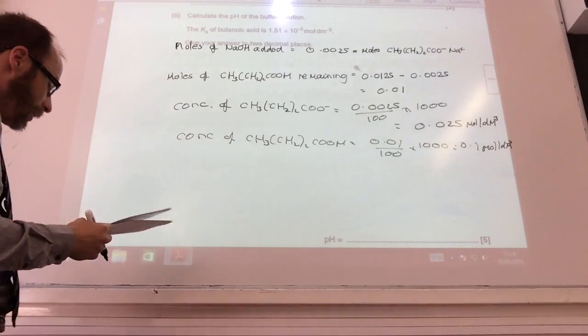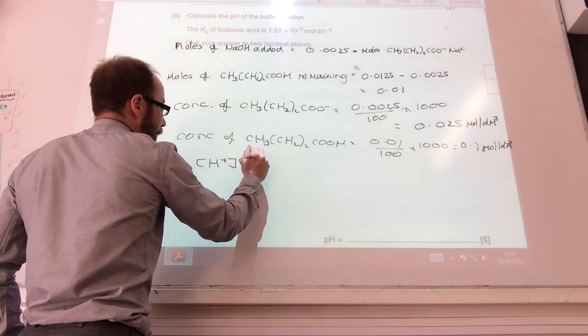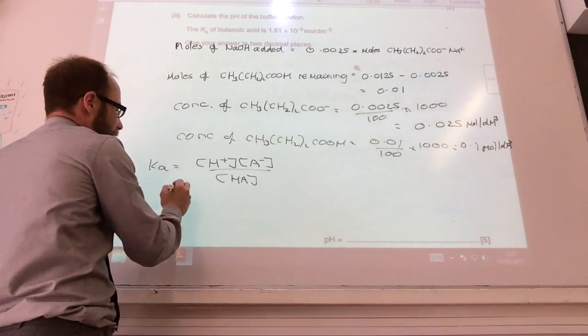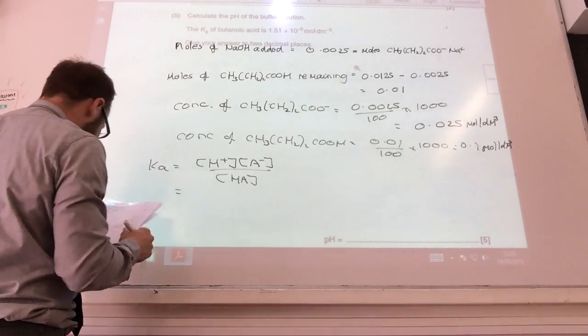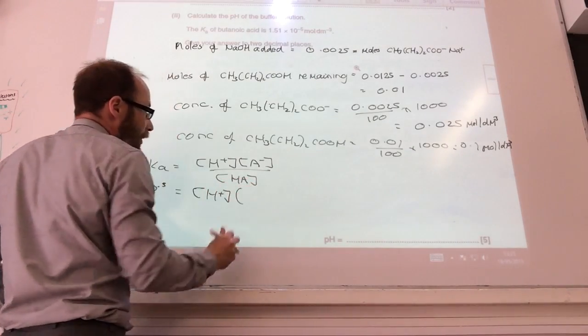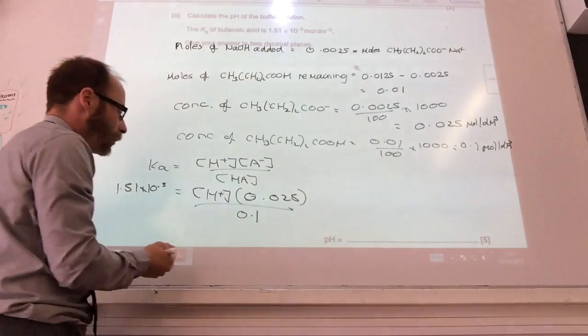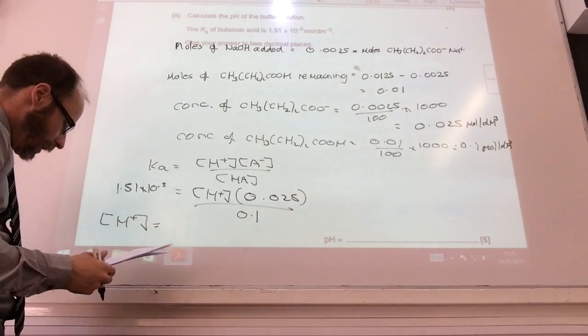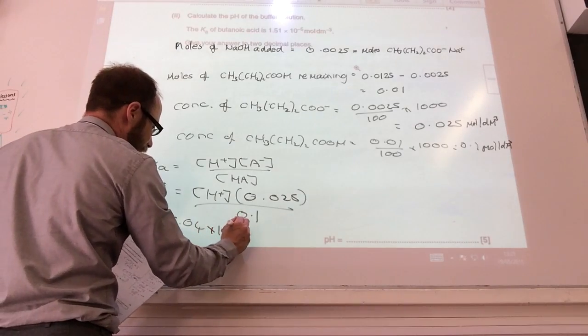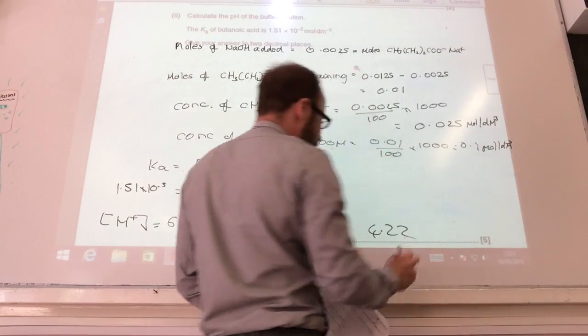So those are the moles that I've got, then all I need to do is plug into my Ka expression. Ka I know is H+ over the concentration of the salt and the concentration of the acid. So Ka, they told me, has been 1.51 times 10 to the minus 5. Concentration of H+ I don't know. Concentration of A minus I do know, has been 0.025. Concentration of acid I know, that's 0.1. If I rearrange that equation, I get concentration of H+ to be 6.04 times 10 to the minus 5. And if you plug that into your pH, so you log that and change the sign, you should get the pH to be 4.22.